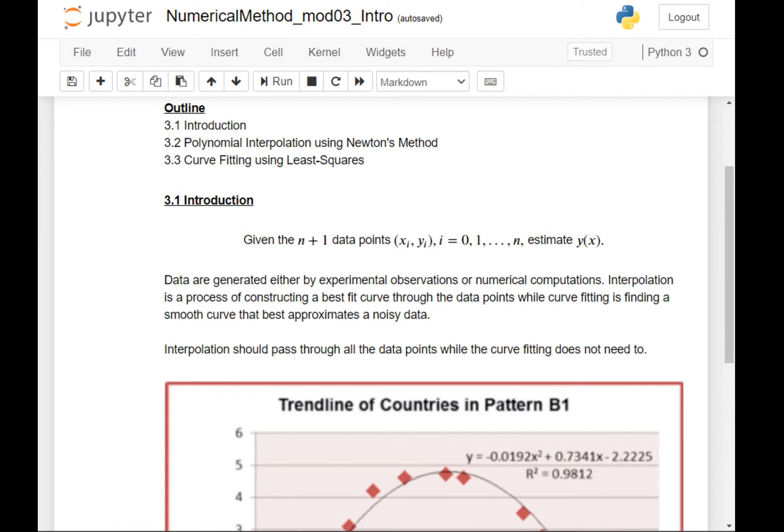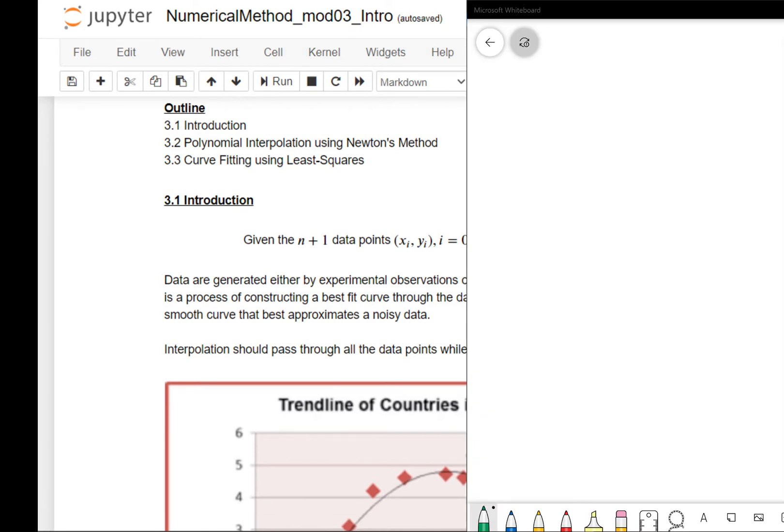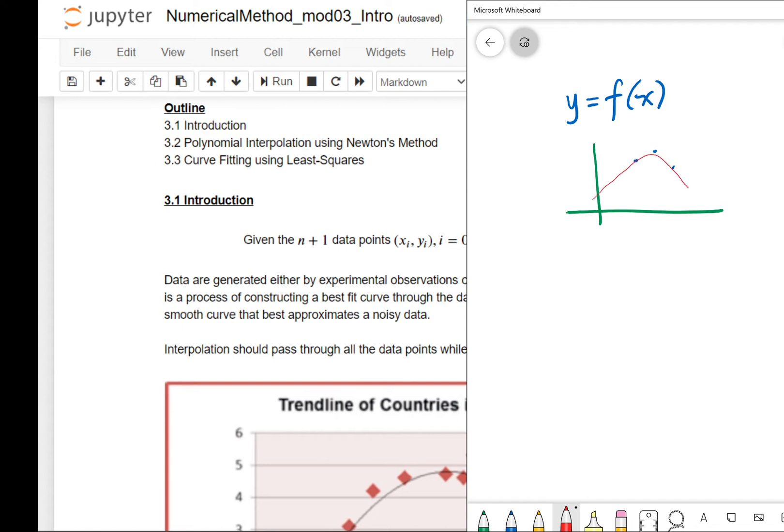Basically, we have this very simple idea that y equals the function of x. Given a certain point, let's say you have two or three points, you can construct curves like this or maybe like this. This is what we call estimation. Given three points, we can estimate the curve.